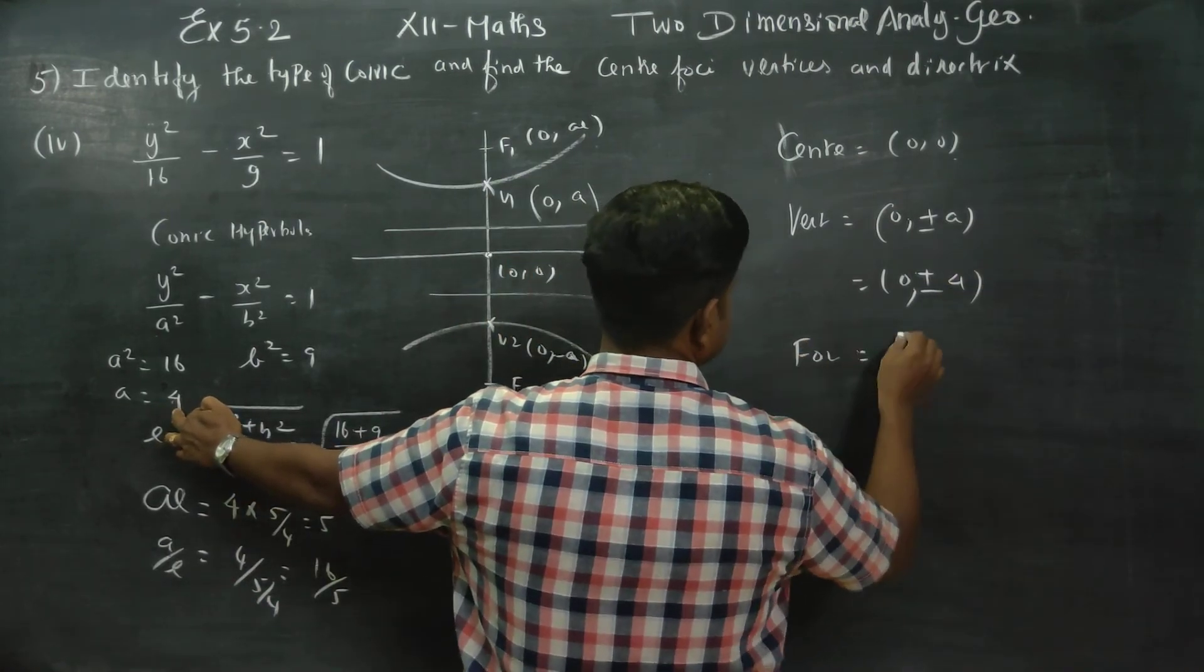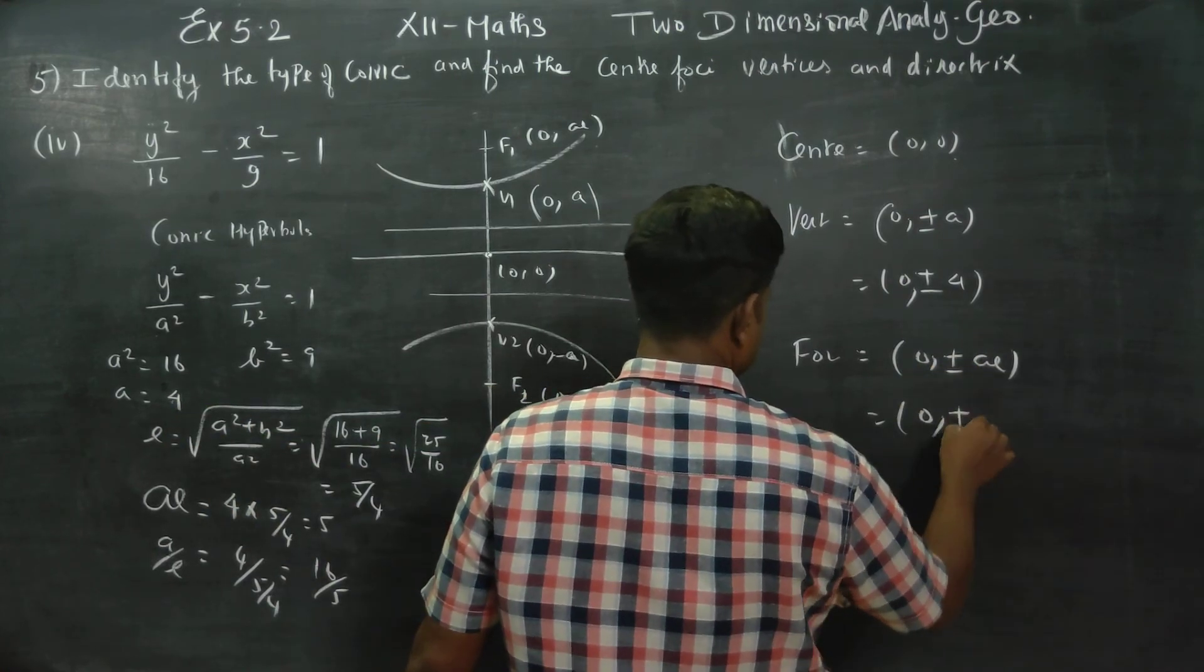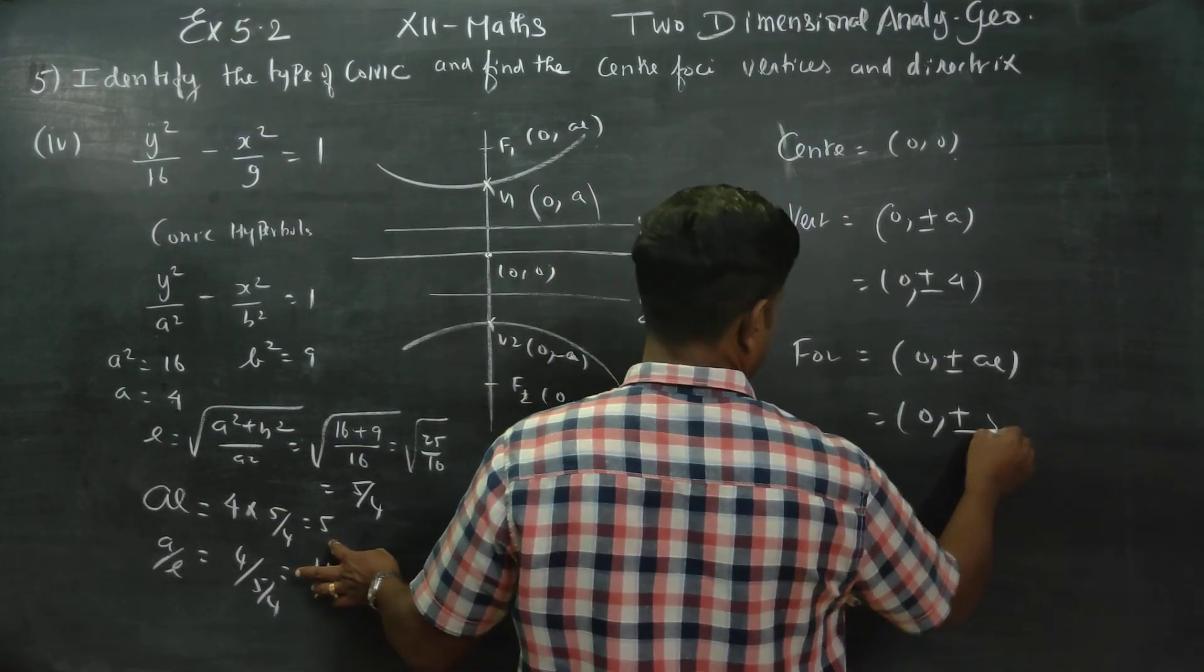Foci answer is 0, plus or minus ae. 0, plus or minus ae. ae is 5, so foci are 0, 5 and 0, minus 5.